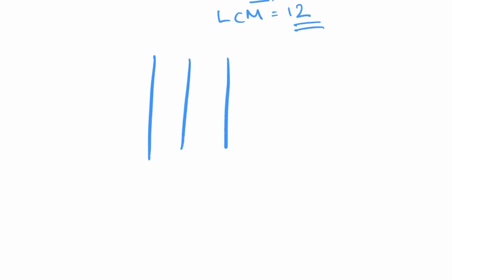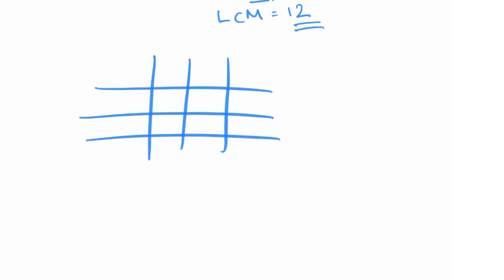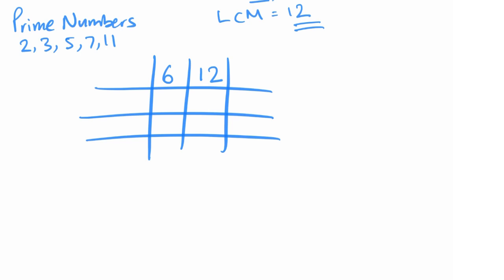First of all, we need to draw a grid and place the numbers on top — the pair of numbers you're finding the HCF and LCM of. You need to find the smallest prime number that goes into both six and twelve. The prime numbers are: two, three, five, seven, eleven — note that one is not a prime number as it only has one factor. The smallest prime number that goes into six and twelve is two: two goes into six three times, two goes into twelve six times.